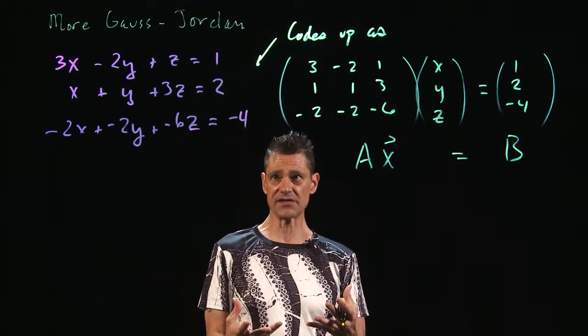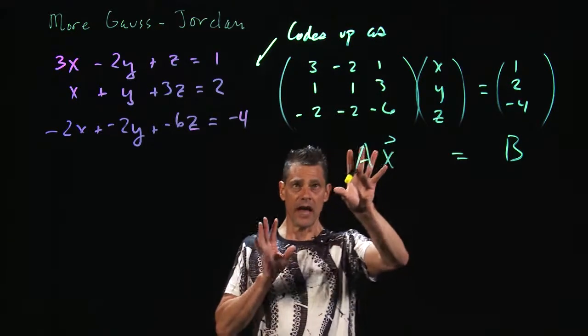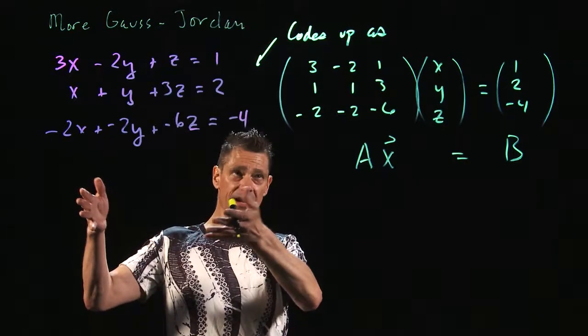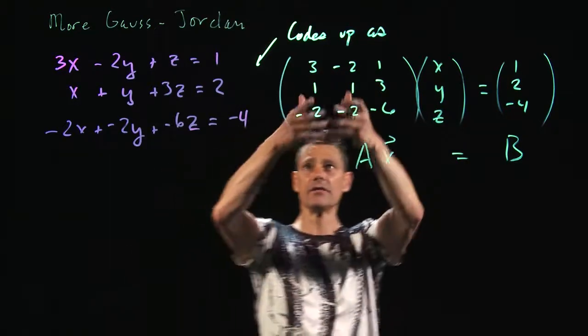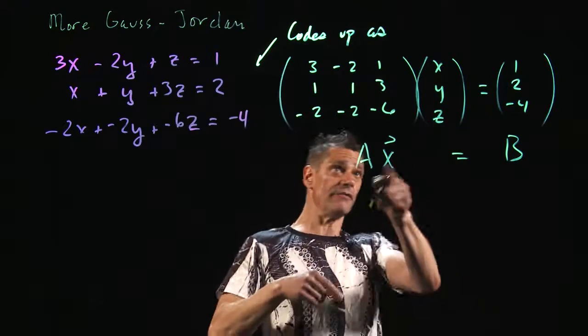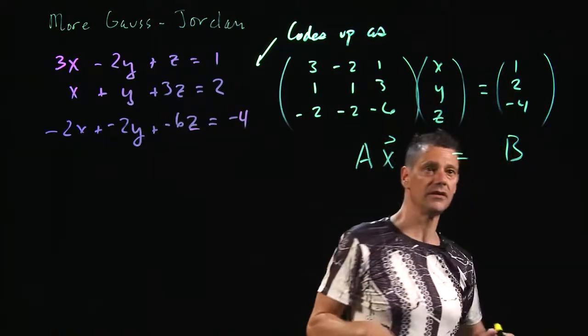And that's one of the things you're going to use Gauss-Jordan for. But what I'd like you to look at is we're going to do the augmented matrix in a second. But this codes up in matrices as the matrix A times the vector x, and it equals the matrix B.